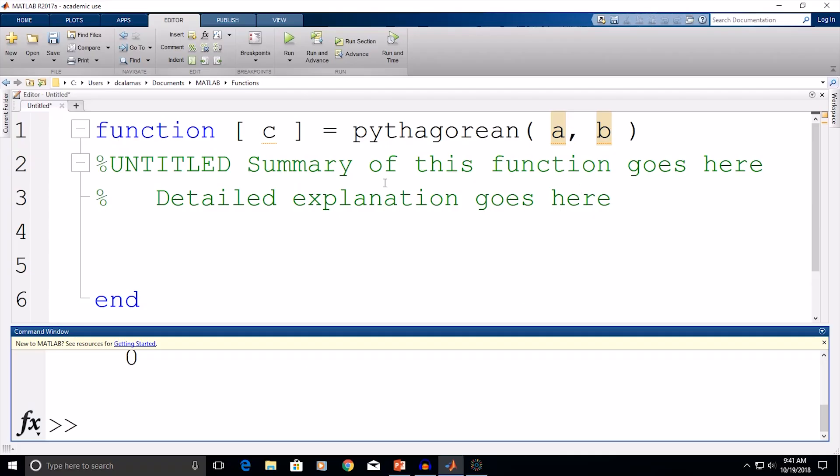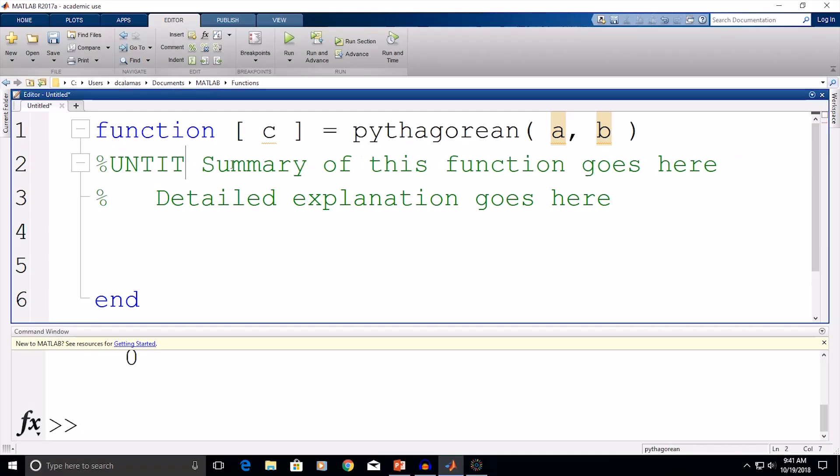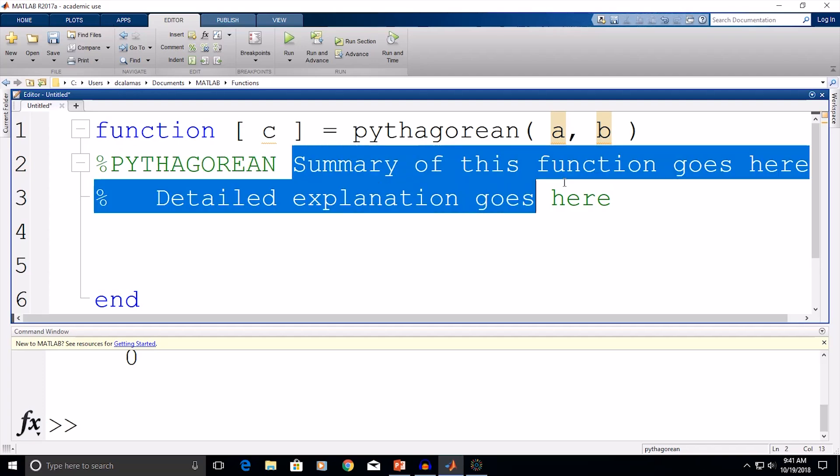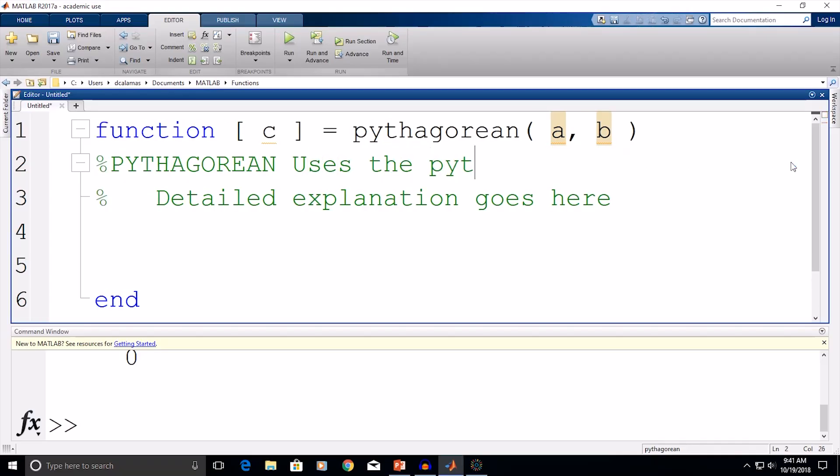Next, we're going to go to our comments section and write a brief summary of the function. So here is the function name, a brief summary uses the Pythagorean theorem, and a little bit more detail would be calculate the hypotenuse. And that's sufficient for now.